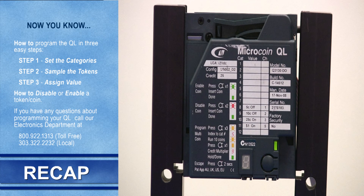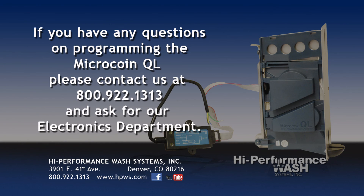Now you have seen how easy it is to program the Microcoin QL. First you set the category for your tokens, then you sample the tokens, and finally you assign a value to the tokens. You also learned how to disable or enable a token. If you have any questions about programming the Microcoin QL, please contact us at 1-800-922-1313 and ask for the electronics department.